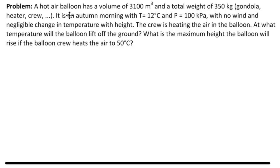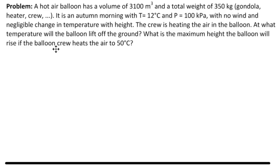The problem reads: a hot air balloon has a volume of 3,100 meters cubed and a total weight of 350 kilograms, including the gondola, the heater, and the crew. It is an autumn morning with T equal to 12 degrees centigrade and P equal to 100 kilopascals, with no wind and negligible change in temperature with height. The crew is heating the air in the balloon. At what temperature will the balloon lift off the ground? What is the maximum height the balloon will rise if the balloon crew heats the air to 50 degrees Celsius?